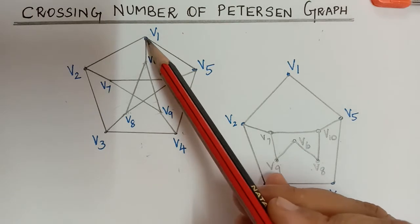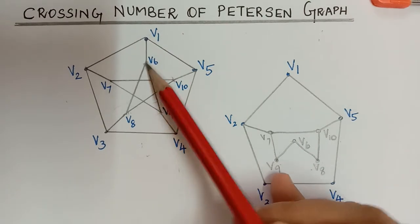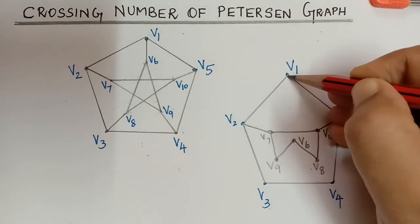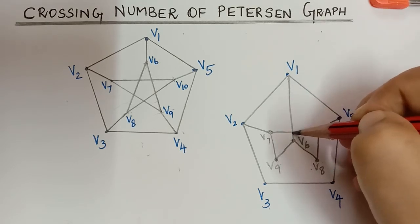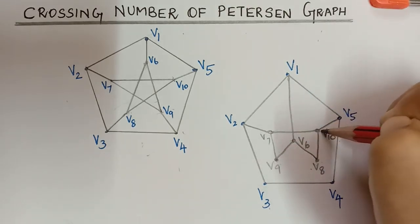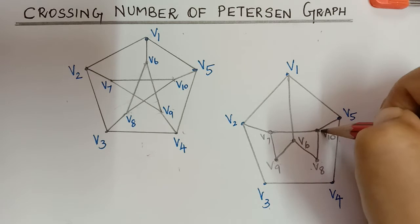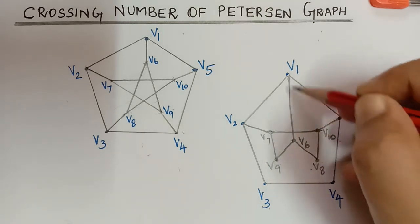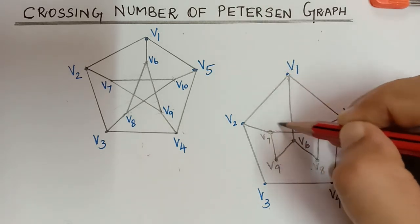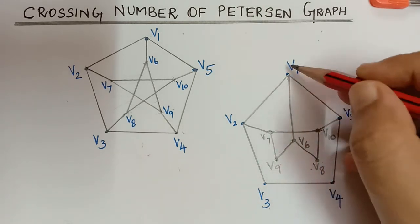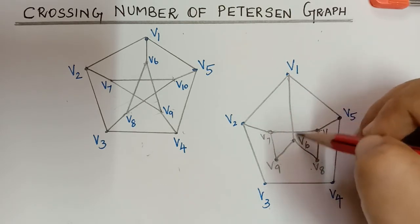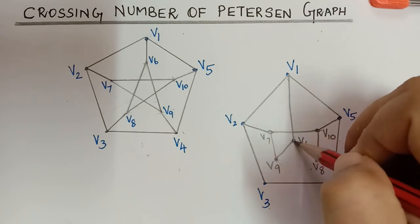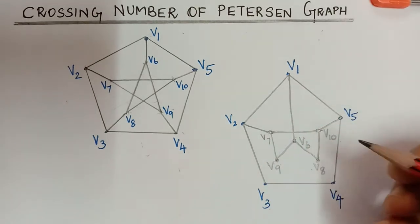However, there is an edge between v1 and v6. When we draw that edge, we have no choice but to cross the edge v7-v10, because there is no other way to route it. No matter how we bring it, there will be a crossing. So the minimum number of crossings here is 1 — we draw v1 to v6 with this one unavoidable crossing.